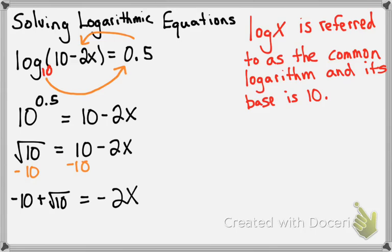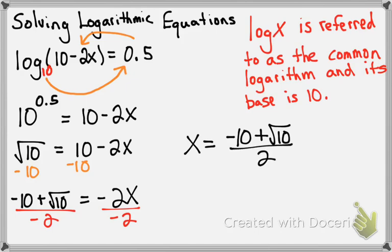I'm going to next divide by negative 2. So what I'm going to get is x equals negative 10 plus the square root of 10 over negative 2.